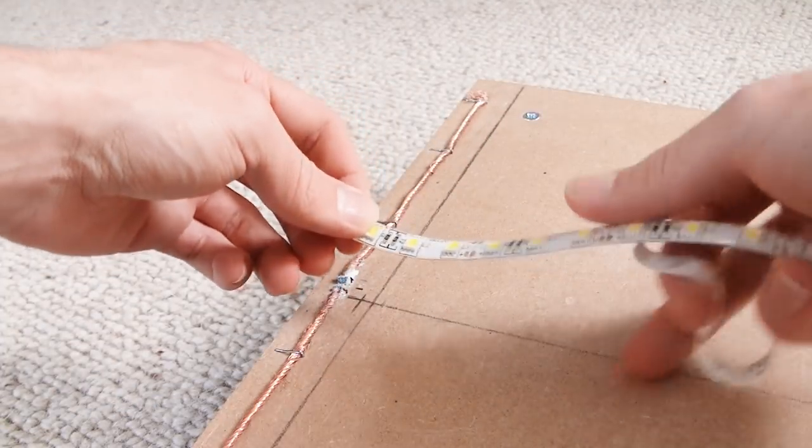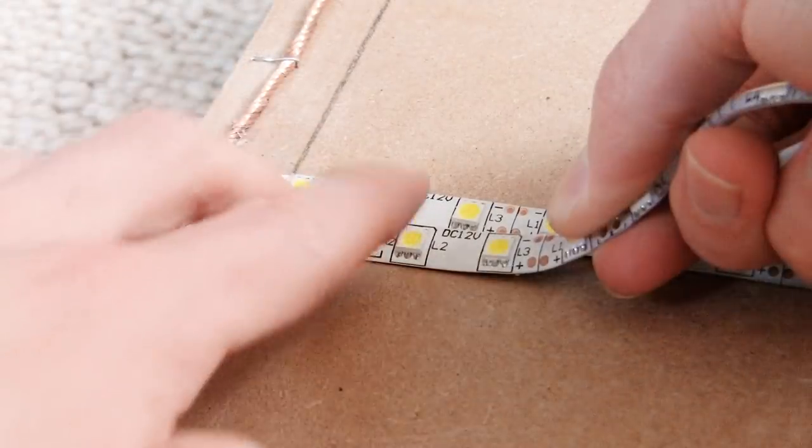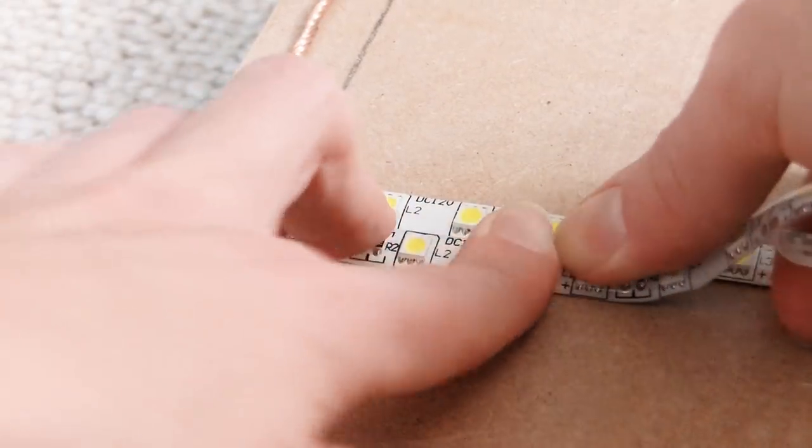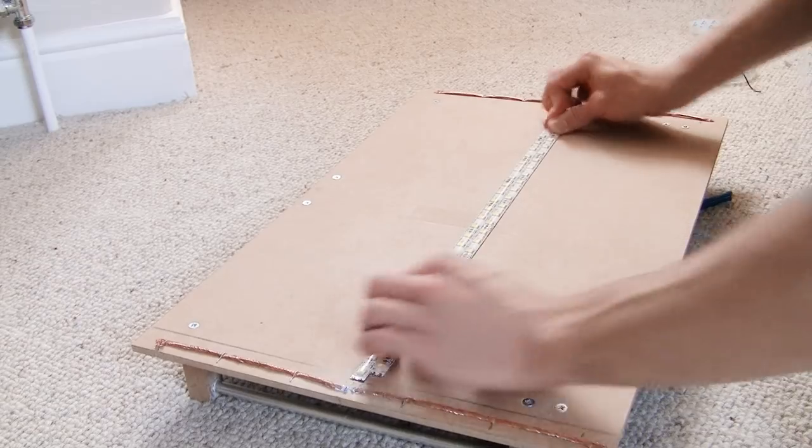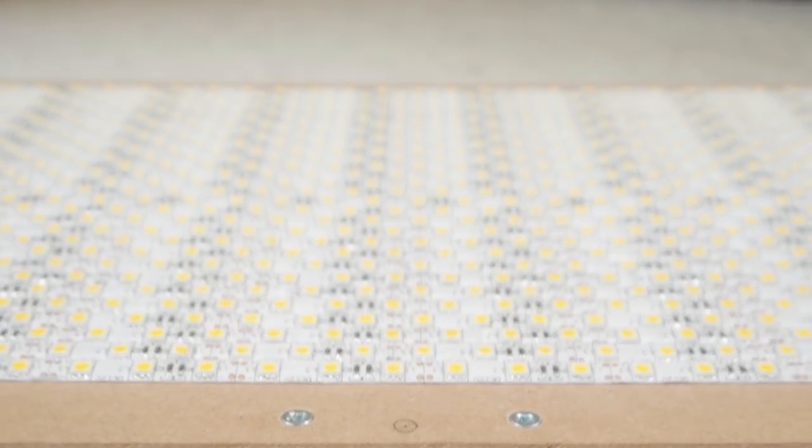Peeling off the tape cover on the back, stick the first strip just to one side of this line. Do the same with the next strip, but offset it so that the LEDs start to make a checkerboard pattern. Continue this process until you've stuck on all your strips.